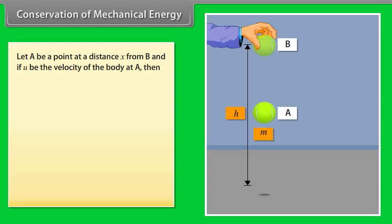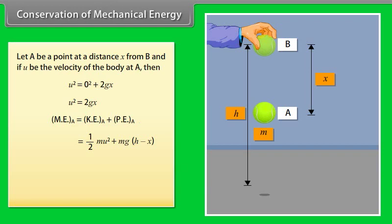Let A be a point at a distance x from B, and if u be the velocity of the body at A, then u square equals 2gx. Mechanical energy of the body at A is equal to kinetic energy of the body at A plus potential energy of a body at A. By calculating it, we get the mechanical energy of the body at A is mgh.